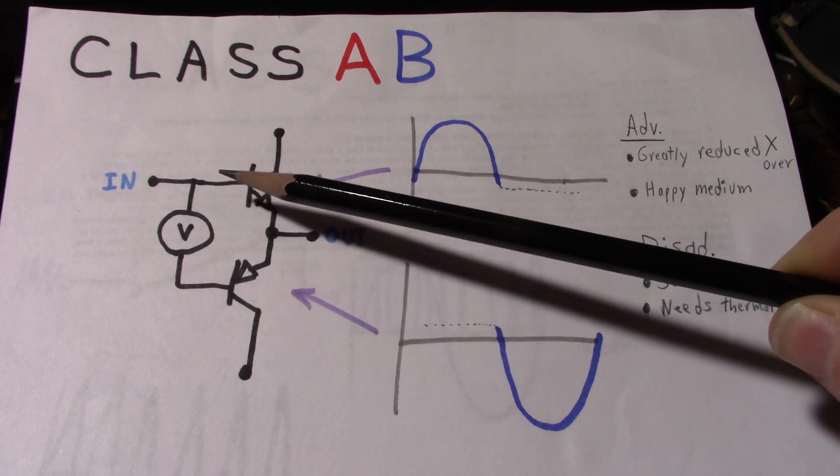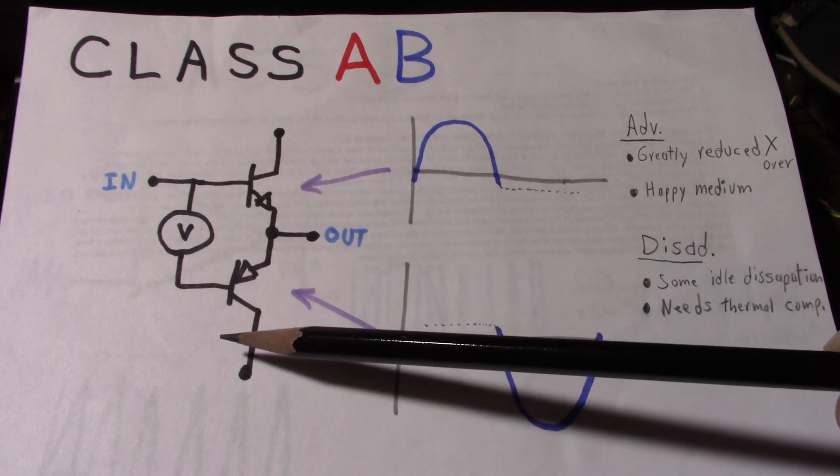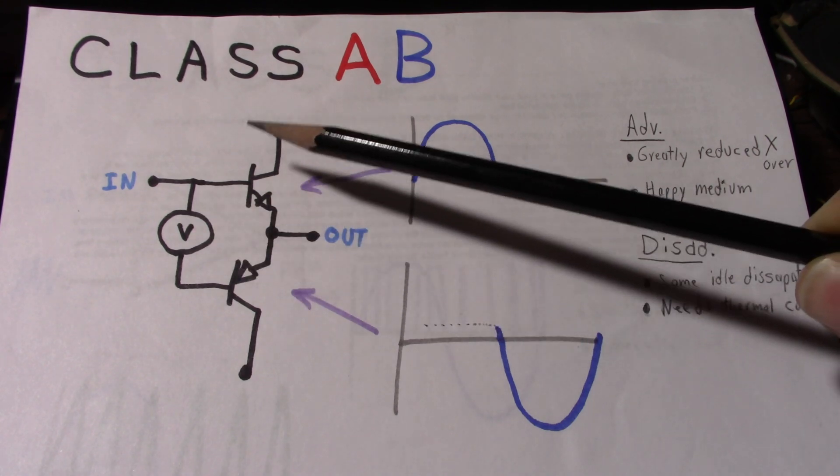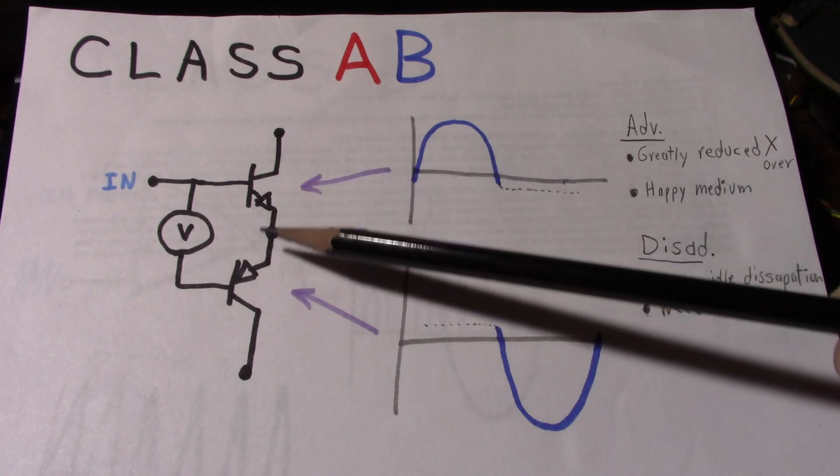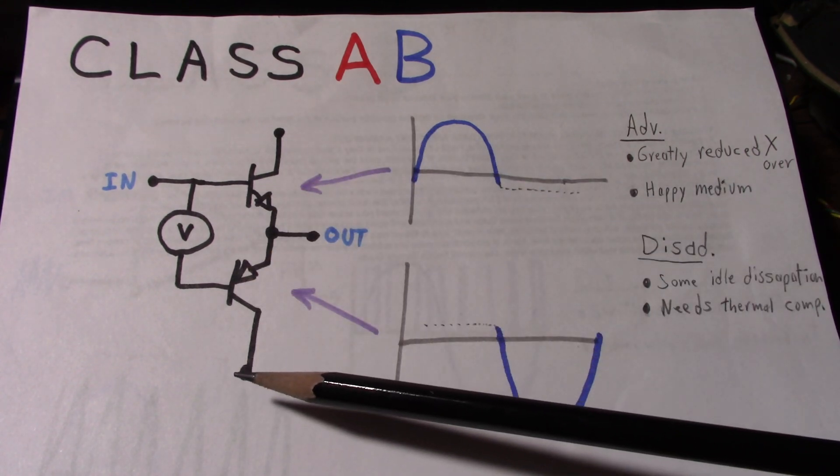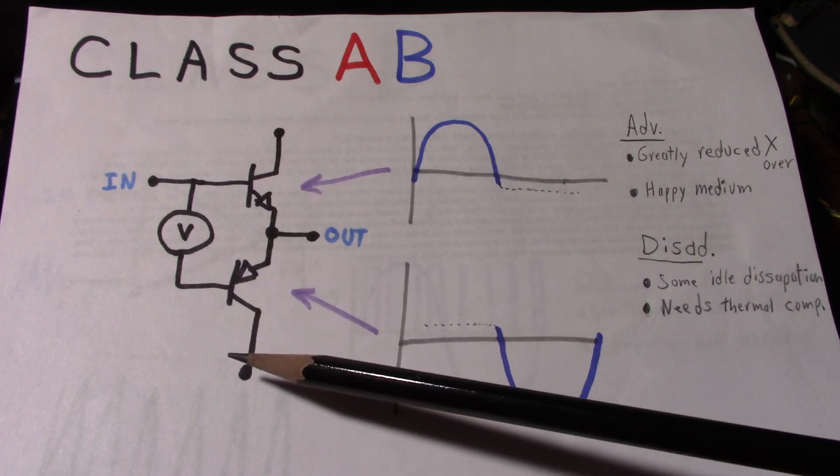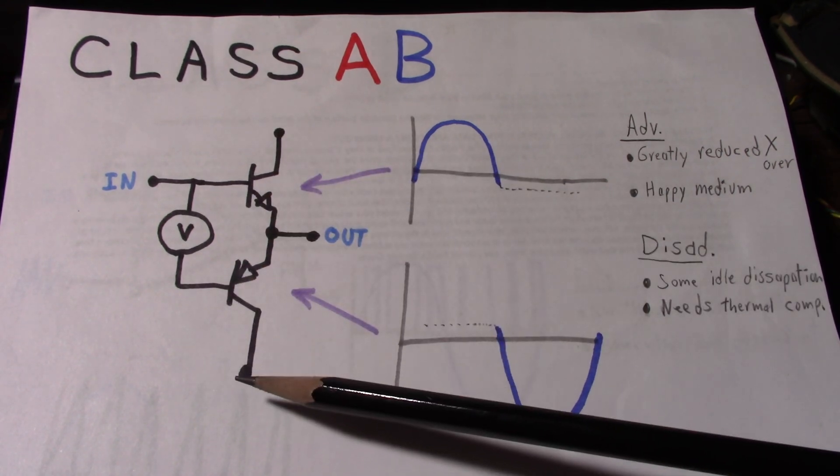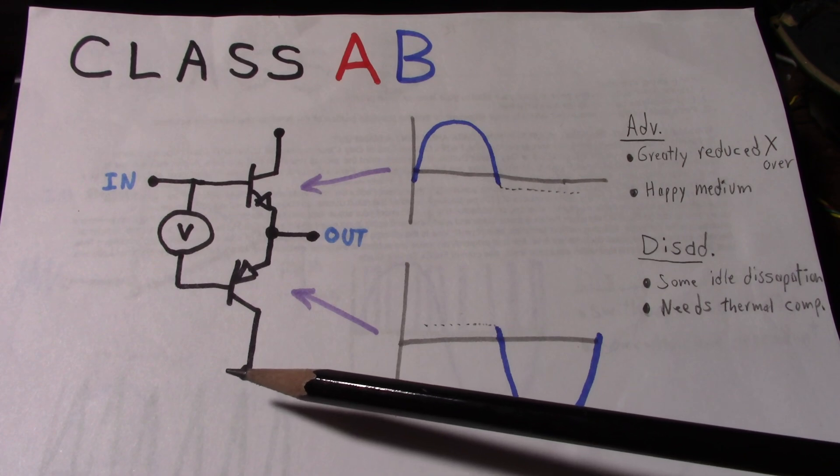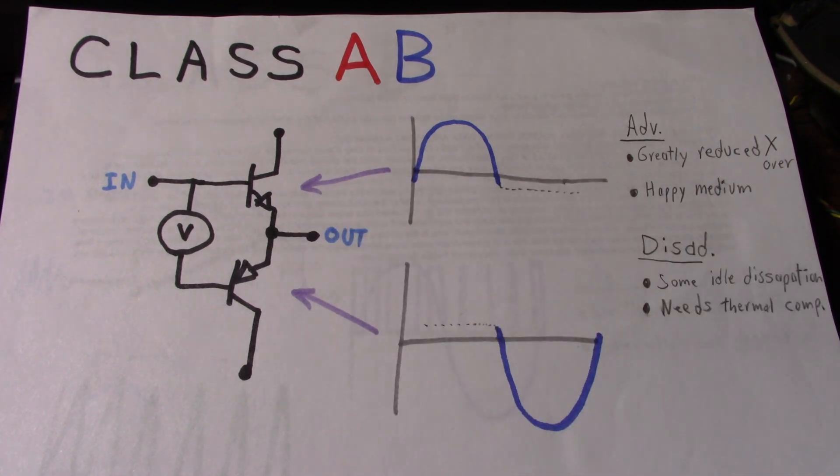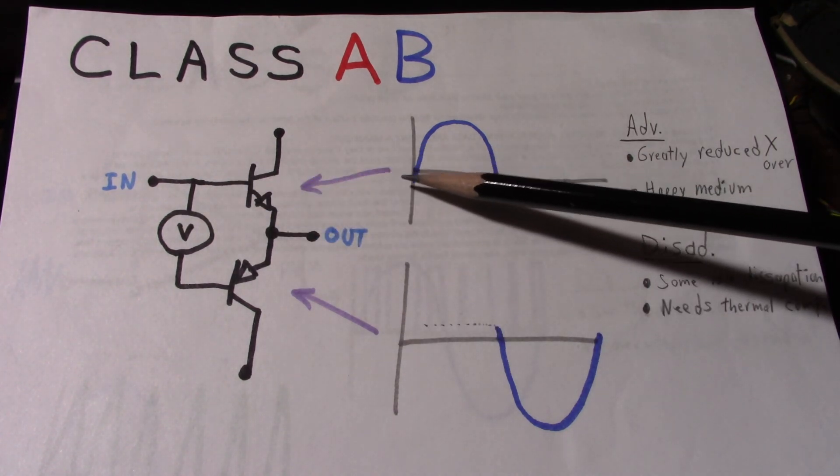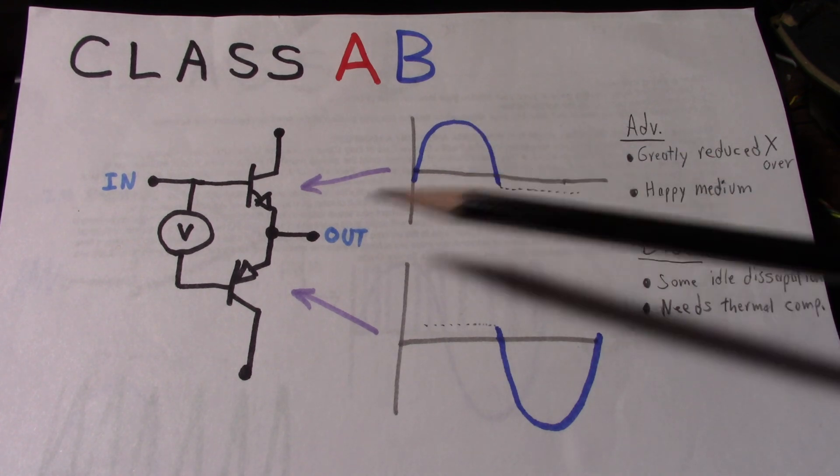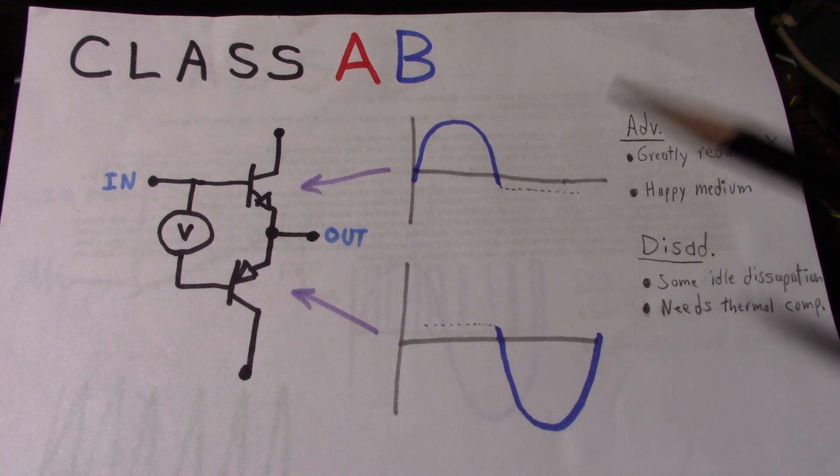And that's just enough to turn these transistors on. We adjust this so it allows a small bias current or collector current to flow through the amplifier's output stage from the positive supply rail to the negative supply rail or ground, whichever the case may be, keeping those transistors turned on, even when the signal is crossing zero.